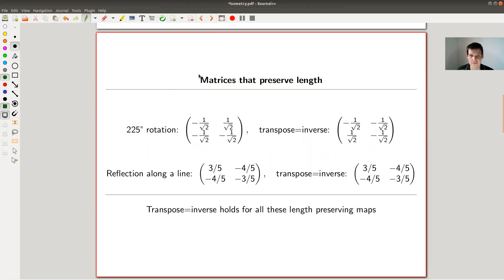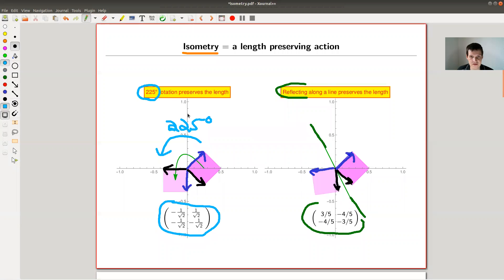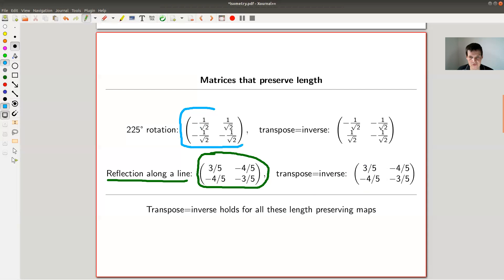But let's have a look at them. So here's my green one, the reflection. That's how it looks like as a matrix. Okay, don't look at the entries too much. That's just how it looks like as a matrix. Good. And the rotation here, the blue one is here. Again, don't look too much at the entries, it doesn't matter so much.